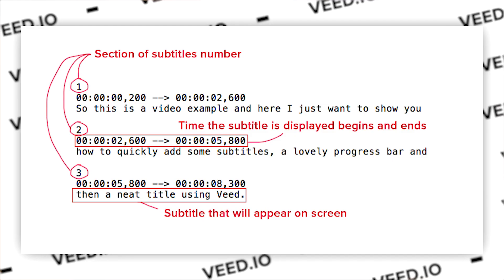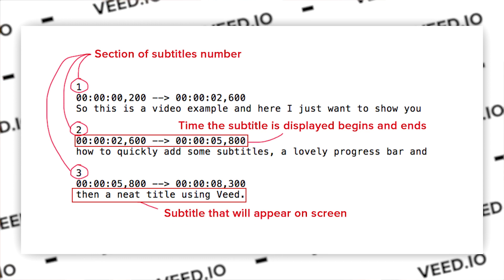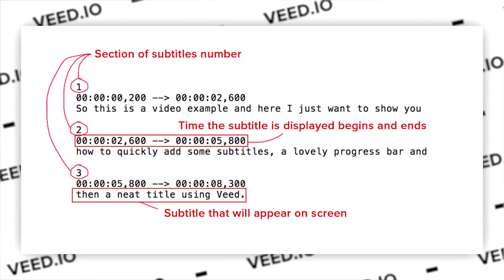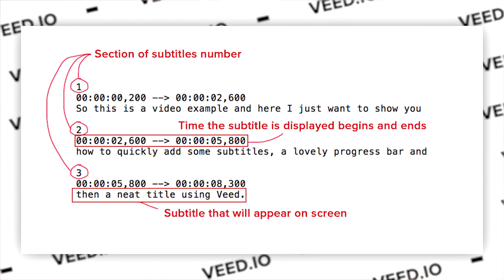There can also be a blank period between subtitles. If the first subtitle ends at two seconds and 600 milliseconds, the second subtitle doesn't have to start at that same time — you could have a three-second gap, so blank periods are allowed. Just keep in mind every subtitle needs a section number, a beginning and ending timecode, correct formatting, and the text to display. Once you've done that, just change the file from .txt to .srt on your computer. It's as easy as that.